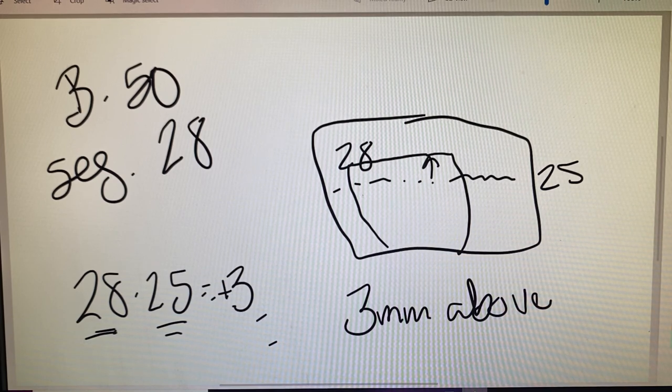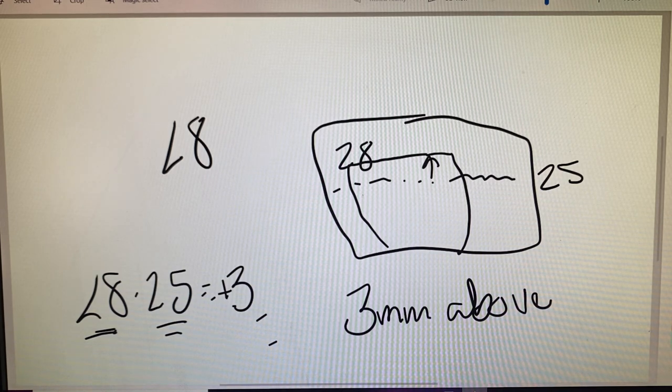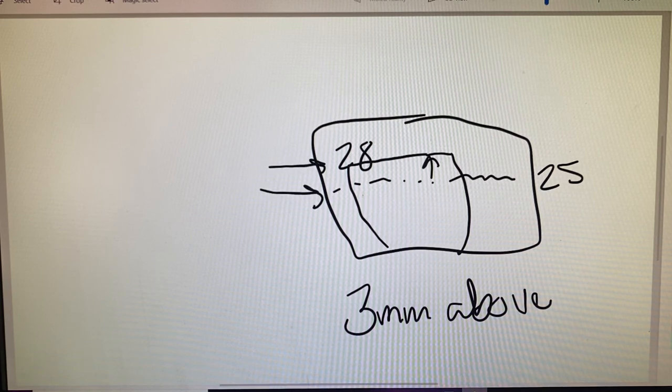So again, this is our calculations for vertical decentration. Just that comparison of the datum line to where the seg is placed, and then that difference between the two.